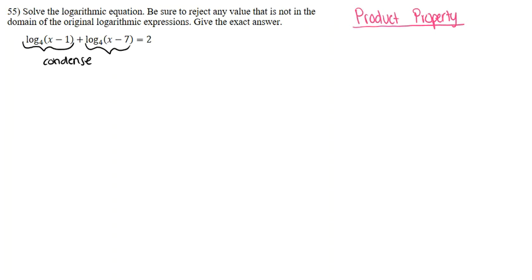Our first property is the product property. That is when you have a logarithmic expression with a base of b with the argument of any number m times any number n, and that expands down to log base b of m plus log base b of n. With product property, you always want to add your two expressions.